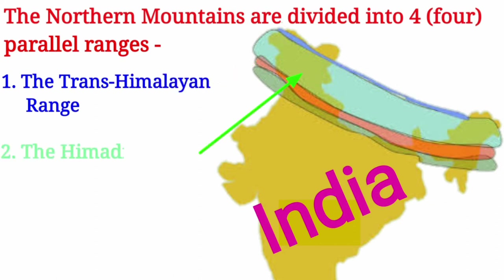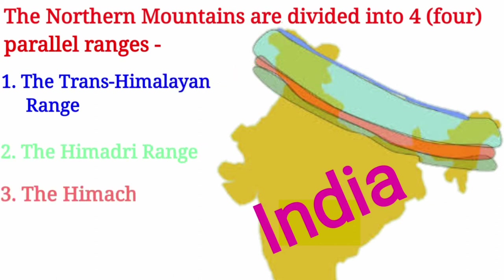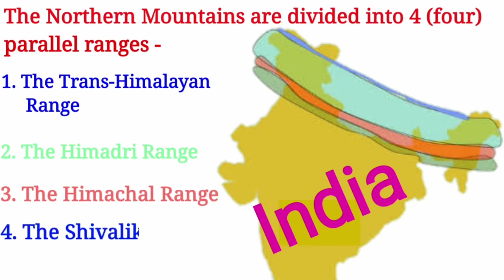The northern mountains are divided into four parallel ranges: the Trans-Himalayan Range, the Himadri Range, the Himachal Range, and the Shivalik Range.